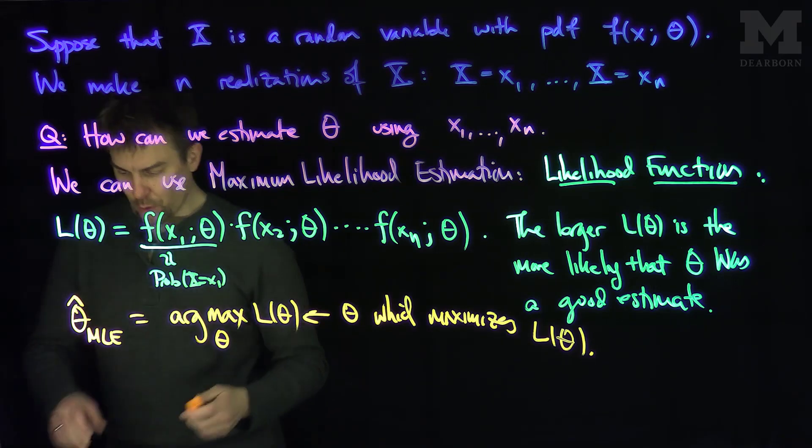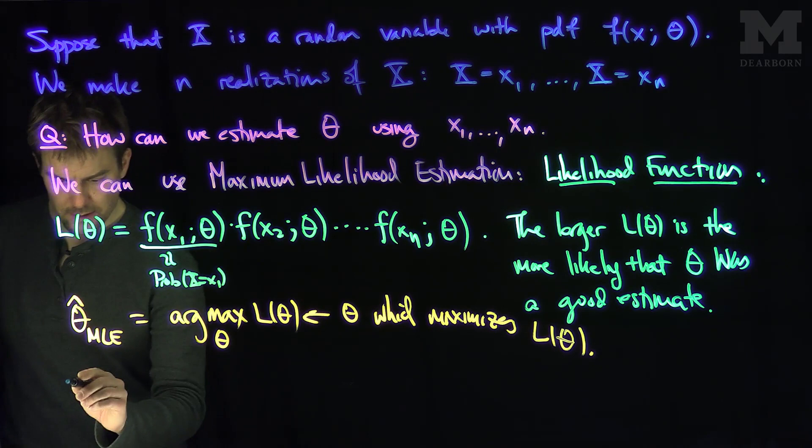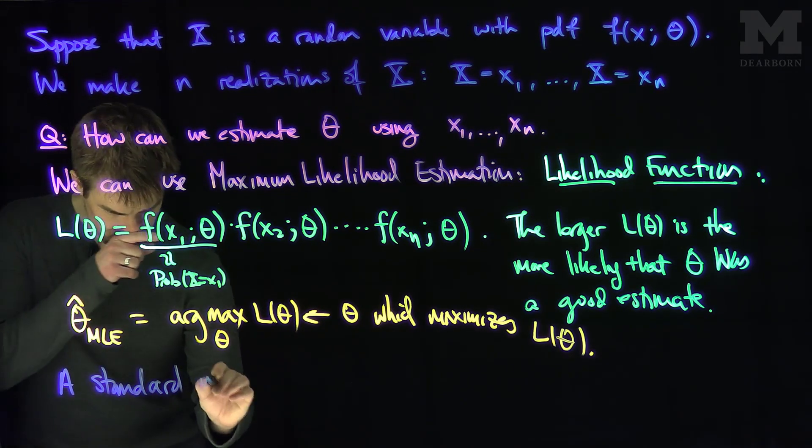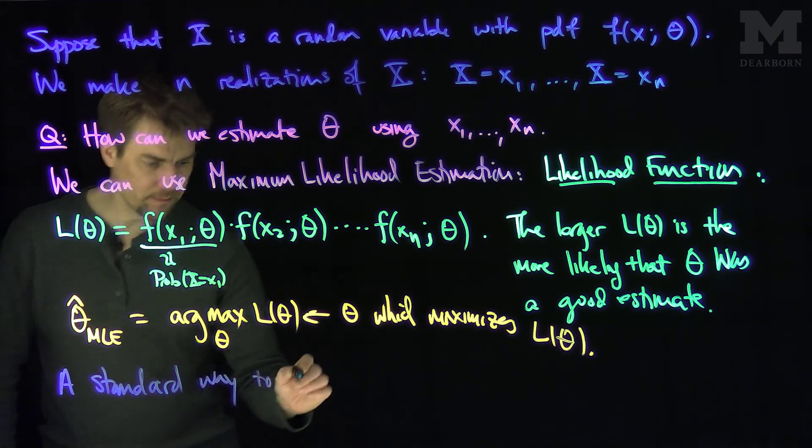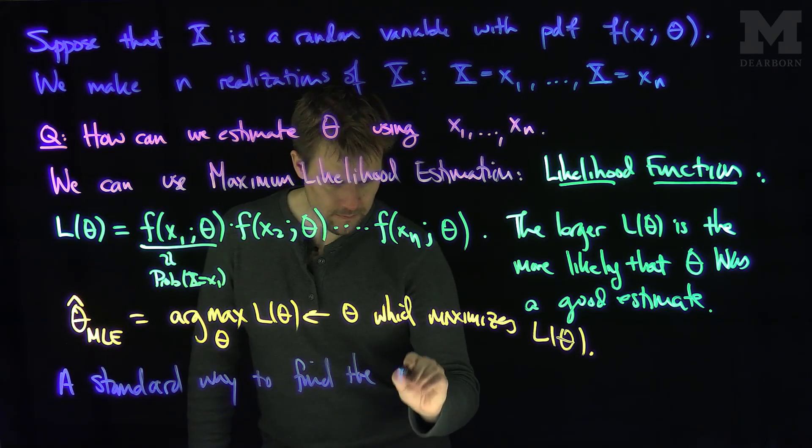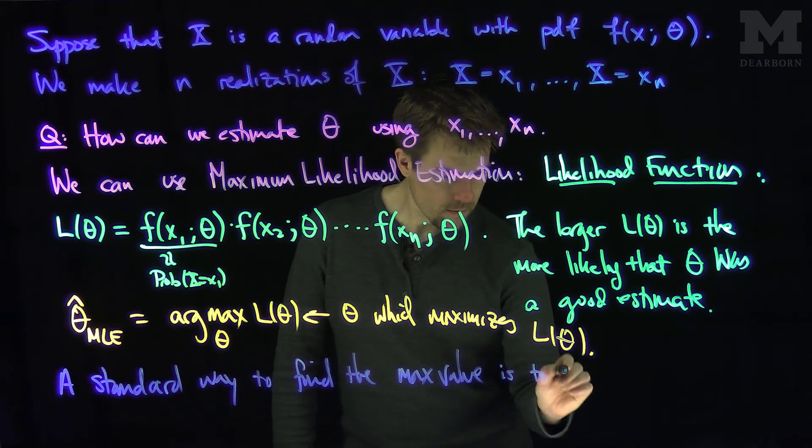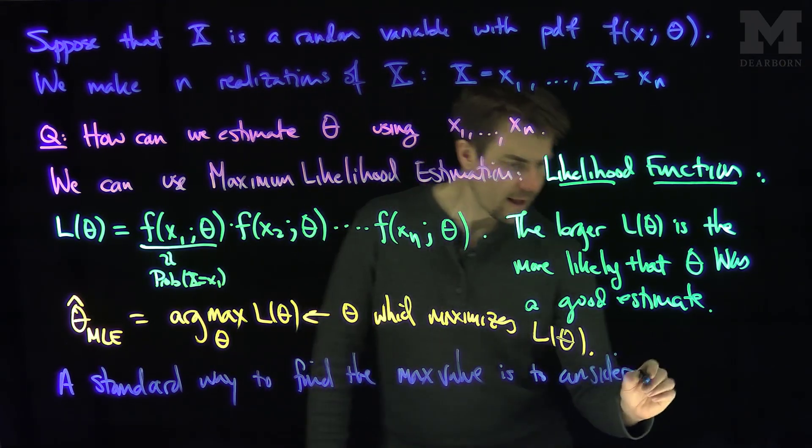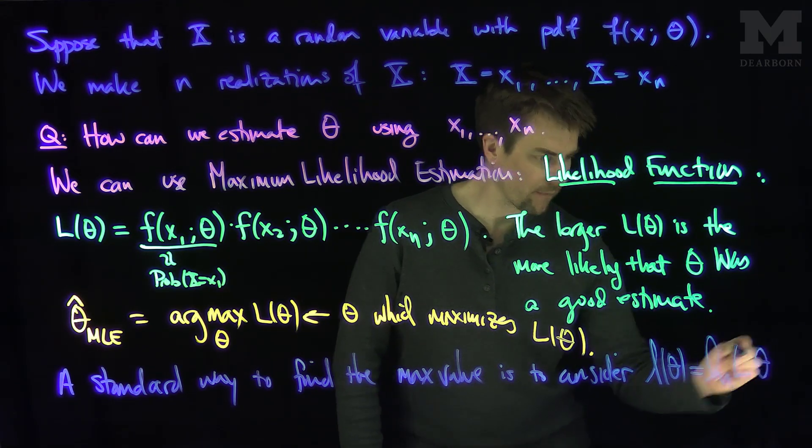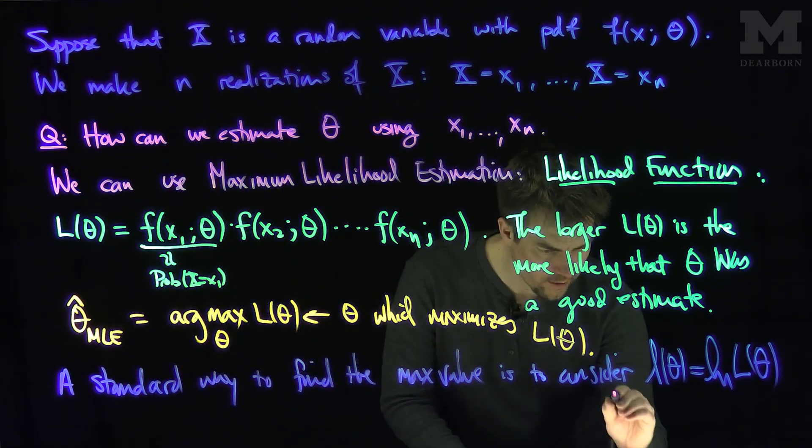There's one standard trick we'll see in future videos. A standard way to find the maximum is to consider little l(θ), which is the natural log of L(θ). This is called the log likelihood.